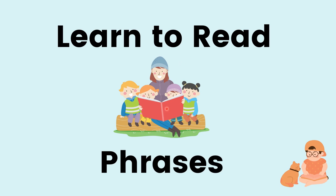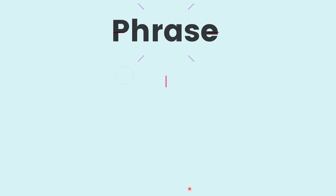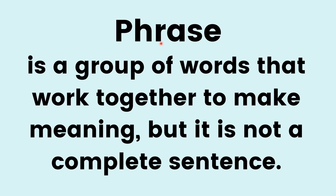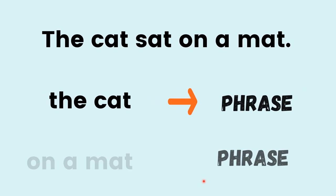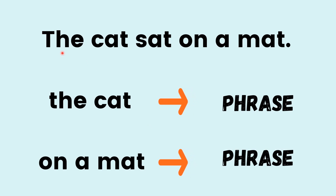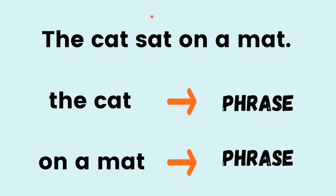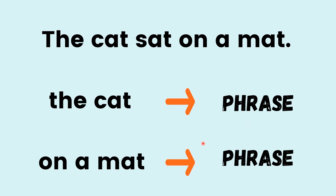Learn to Read Phrases. What is a phrase? A phrase is a group of words that work together to make meaning, but it is not a complete sentence. For example, the cat sat on a mat. This is a sentence. The cat is a phrase. On a mat is also a phrase.